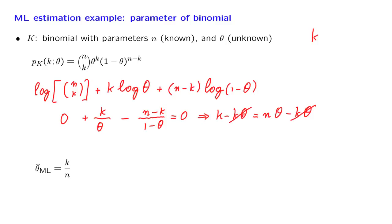This tells us that theta should be equal to k over n. So this is the maximum likelihood estimate — a pretty reasonable answer. Rephrasing in terms of estimators and random variables, the maximum likelihood estimator is: we take the random variable K that we observe and divide it by n, giving us our estimator.